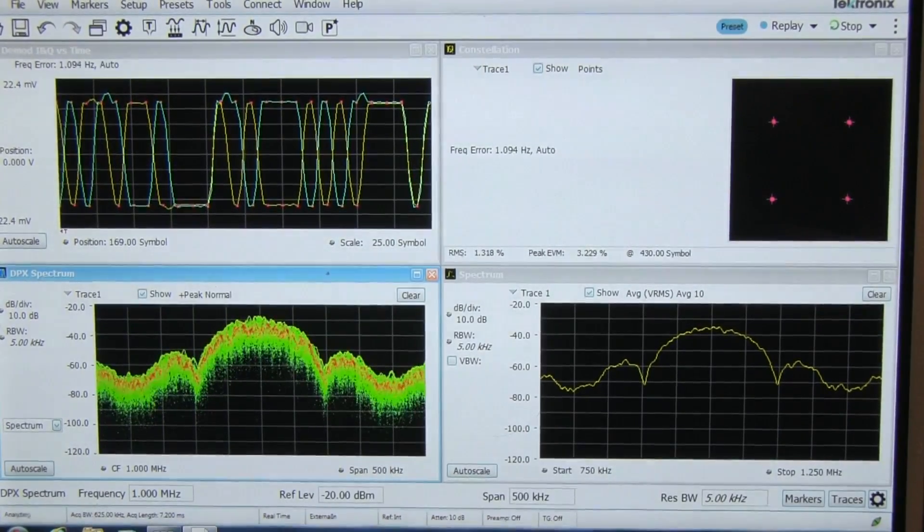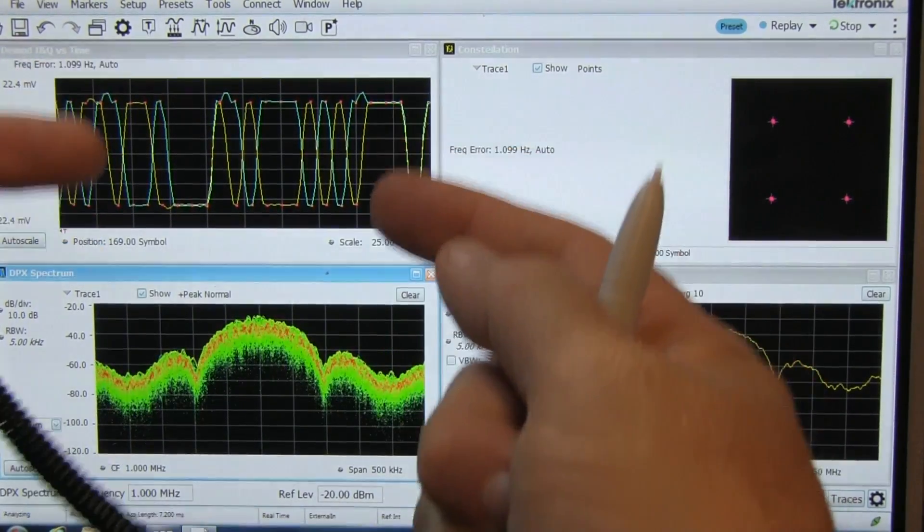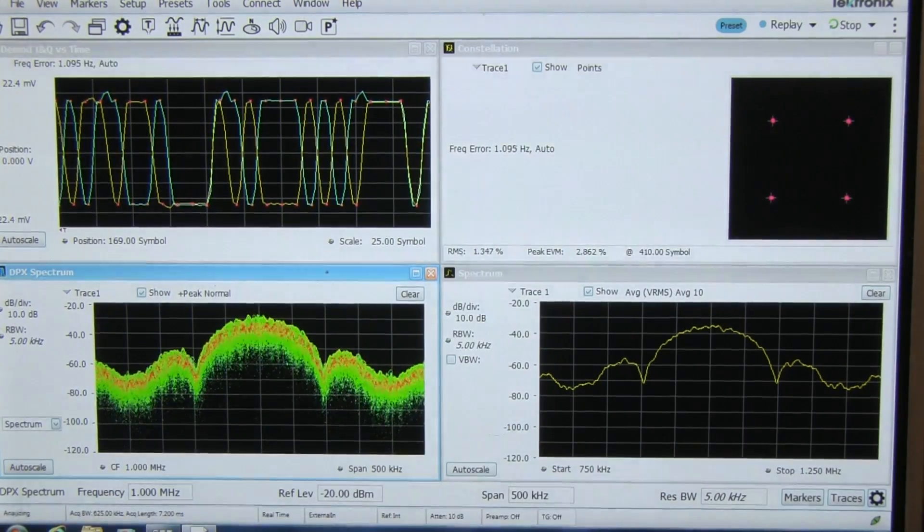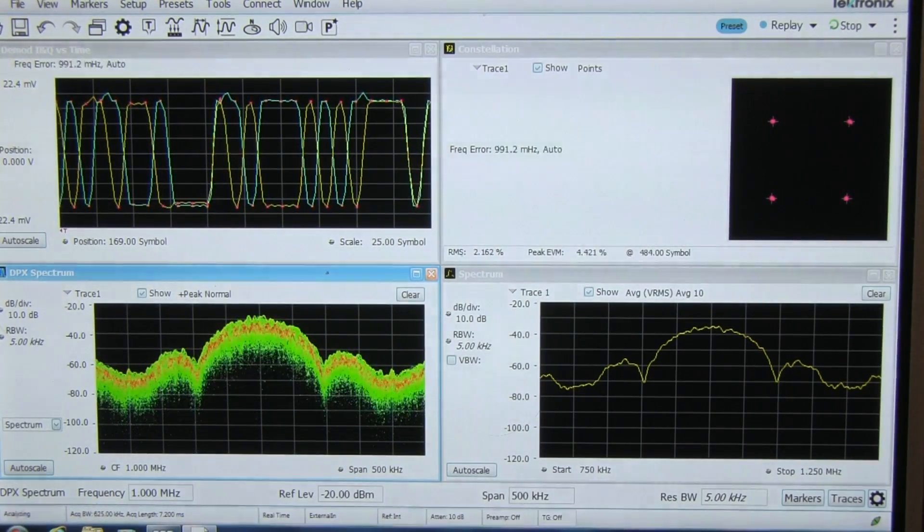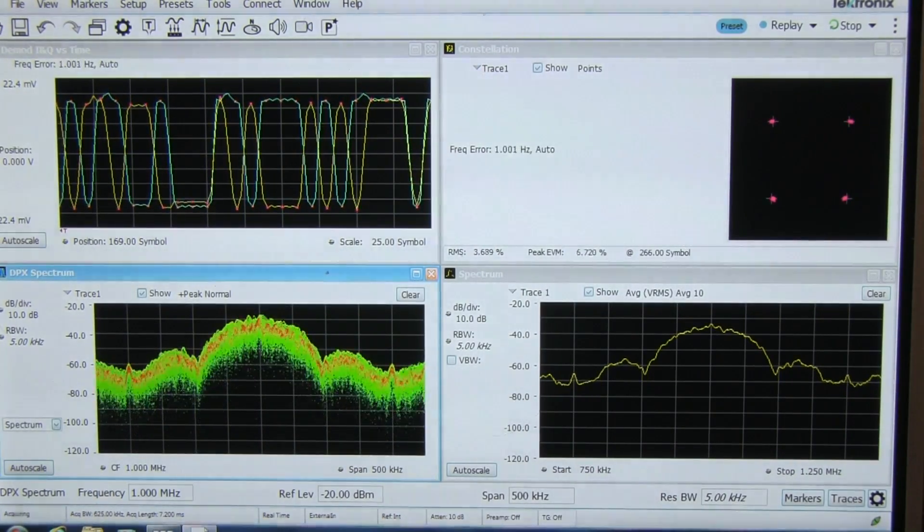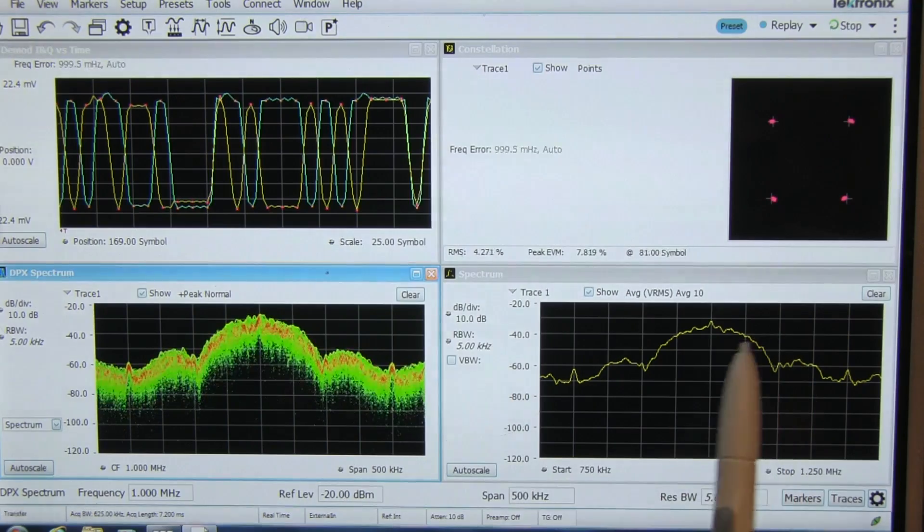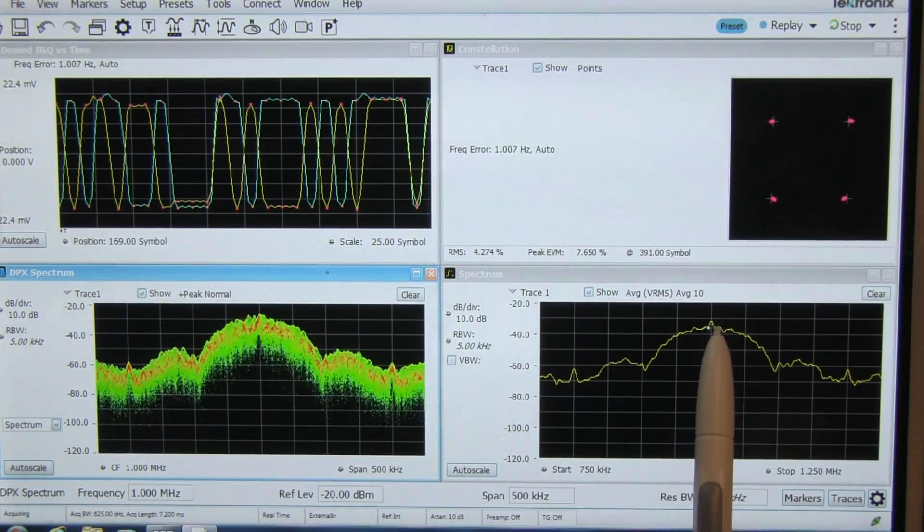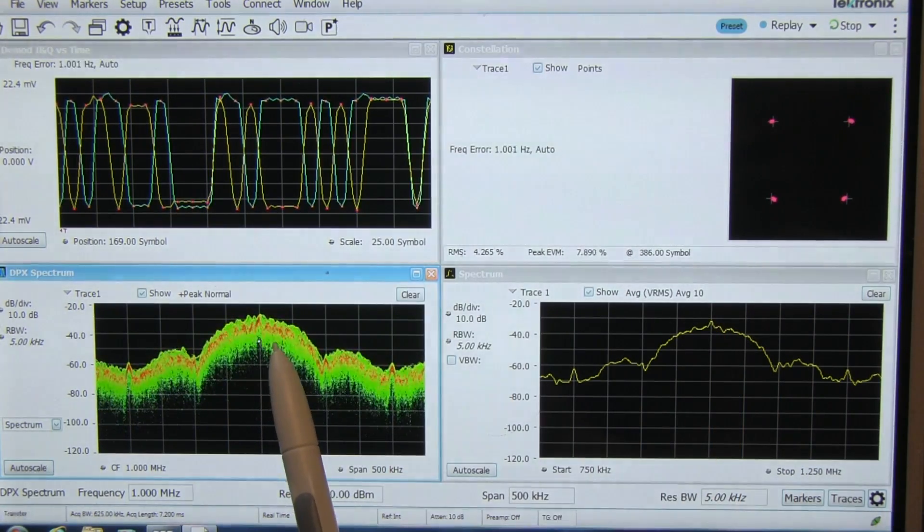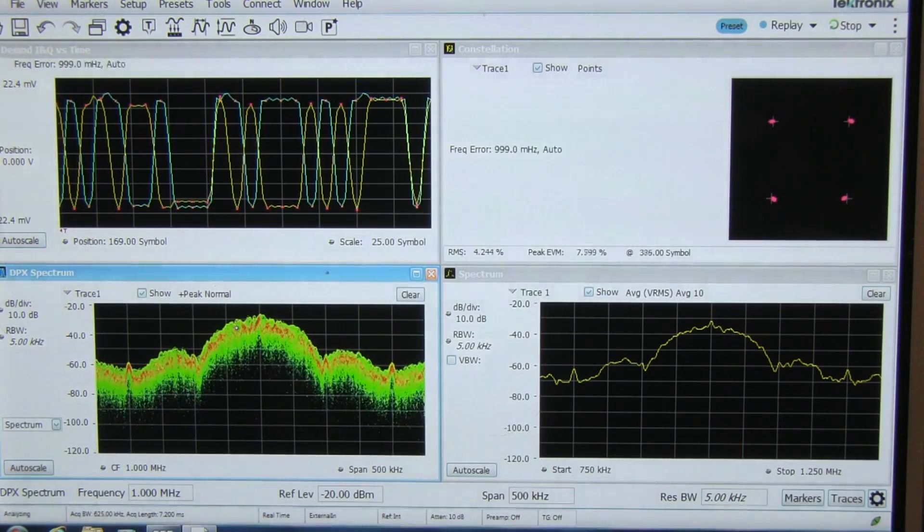The first impairment we will look at is a DC offset between the I and Q waveforms. If I inject that DC offset, there isn't a whole lot that is visible. The constellation diagram doesn't change very much, but if you look carefully you see a little bit of a peak popping up here on the spectrum, and it is visible here as well. That is known as carrier leakage.